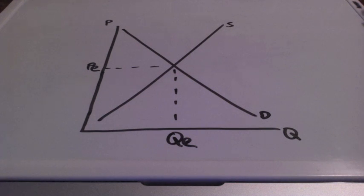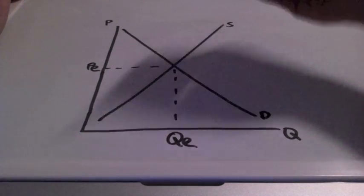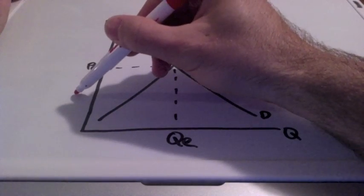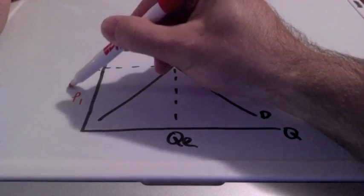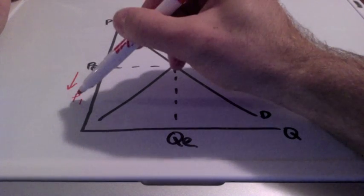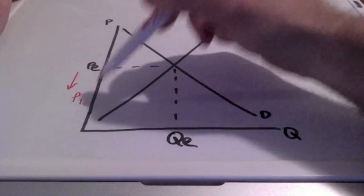In our second disequilibrium example, we are going to take a look at what happens when prices decrease. So, if we move from our equilibrium price to price 1,